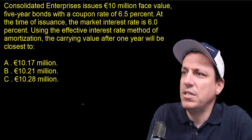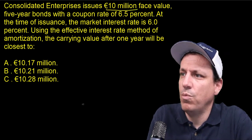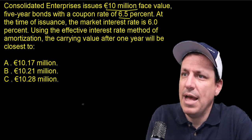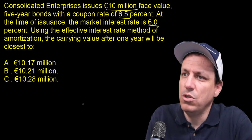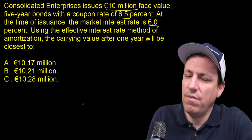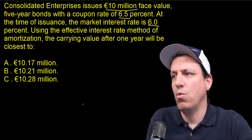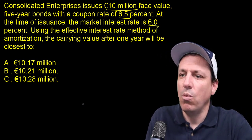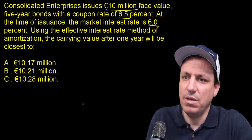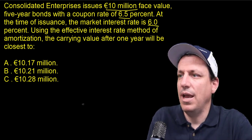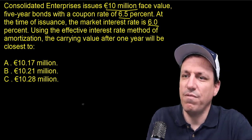Consolidated Enterprises issues a $10 million face value, five-year bond with a coupon rate of 6.5%. At the time of issuance, the market interest rate is 6%. Using the effective interest rate method of amortization, the carrying value after one year will be closest to — well, we know all of these are issued at a premium because it's over $10 million and the market interest rate is 6% while the coupon rate is 6.5%.